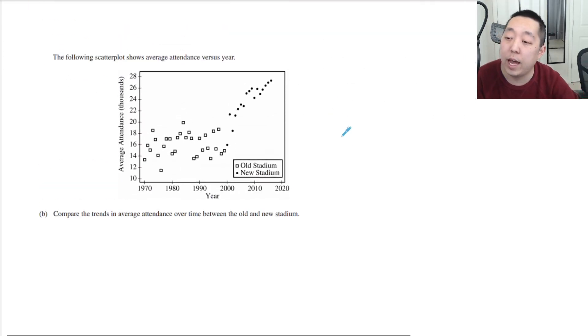The following scatterplot shows the average attendance versus year, old stadium versus new stadium. Compare the trends in average attendance over time between the old and new stadium. Well, old stadium looks like no association over time, it looks pretty flat. So for the old stadium I would say it has no trend over time with maybe a high degree of variability, large variance, larger variability.